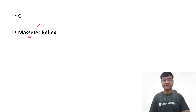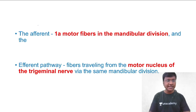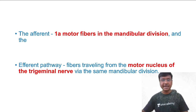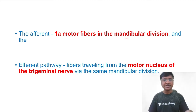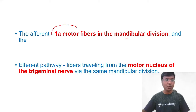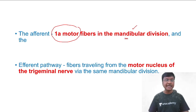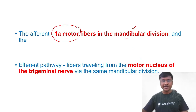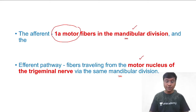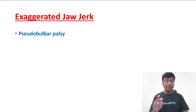Another name for this reflex is the masseter reflex. An important MCQ point: while the afferent is the mandibular division, specifically it is the 1a fibers within the mandibular division that carry the afferent of the jaw jerk or masseter reflex. The efferent travels from the motor nucleus of the trigeminal nerve via the same mandibular division.